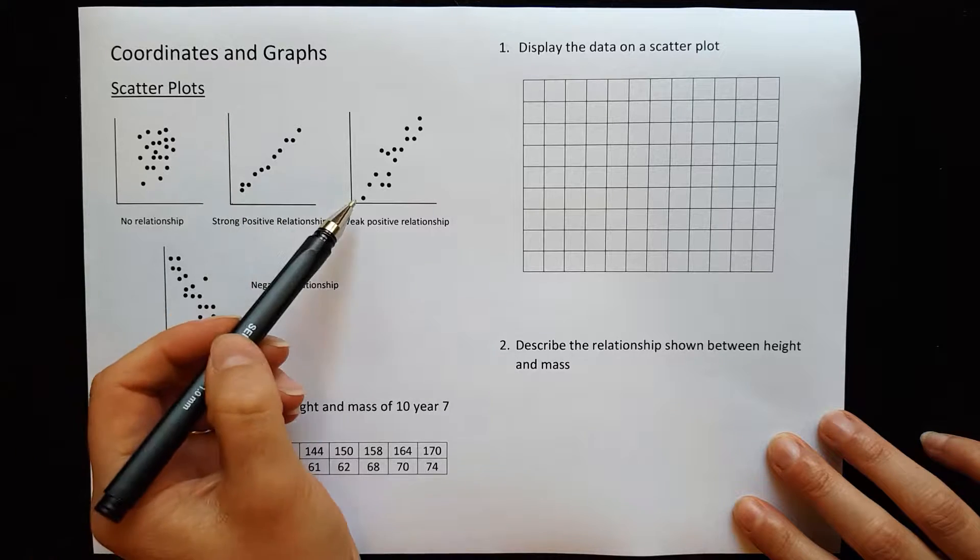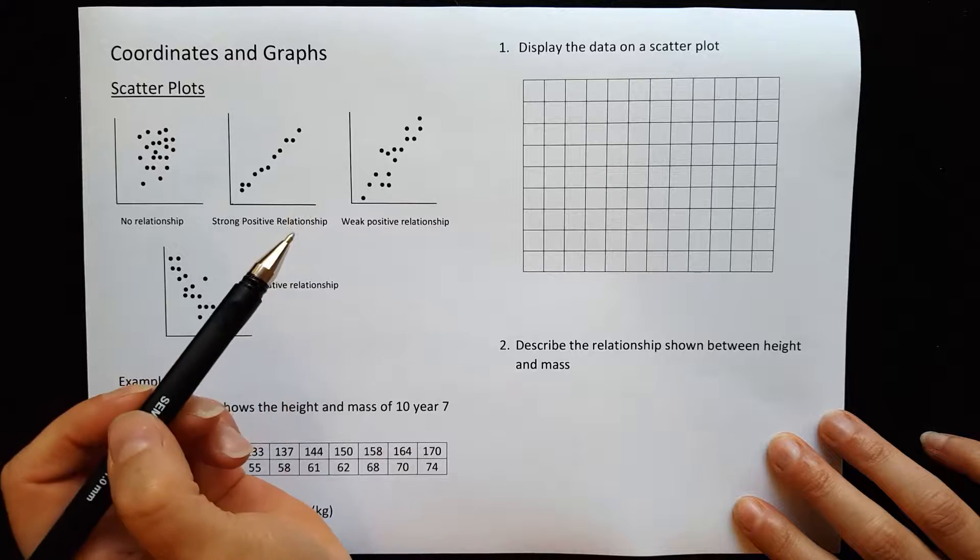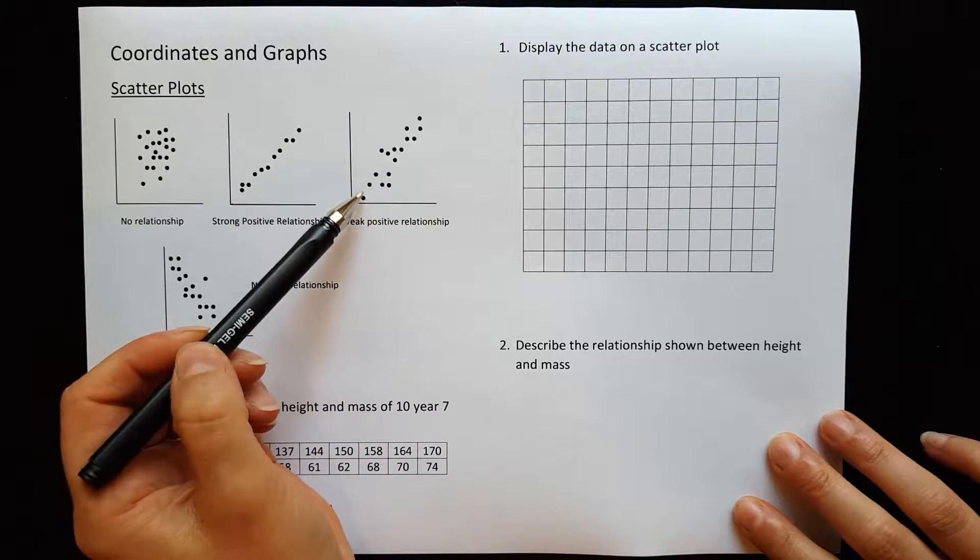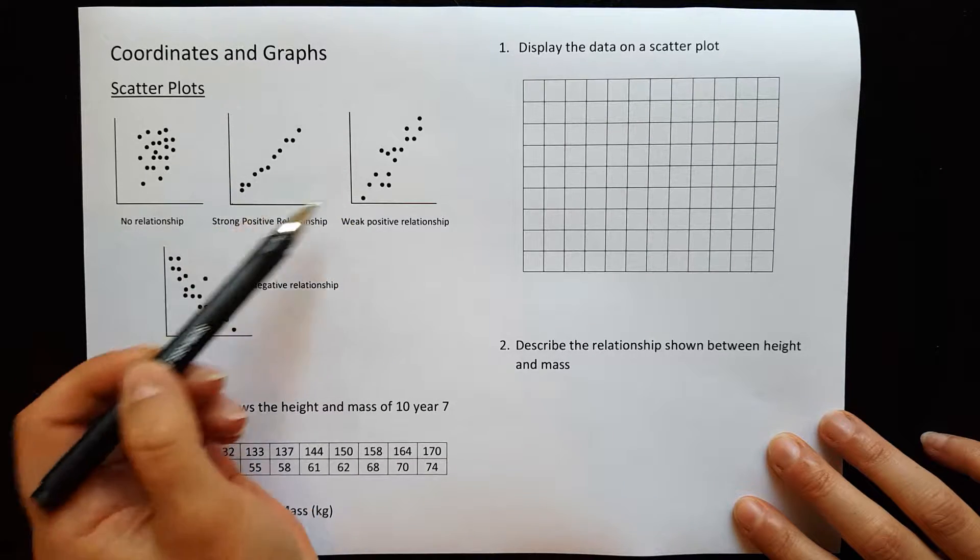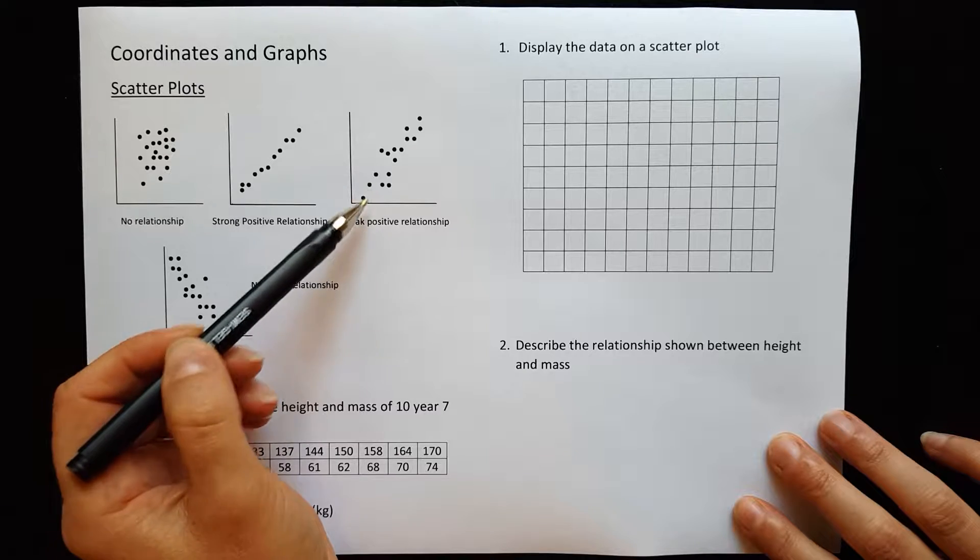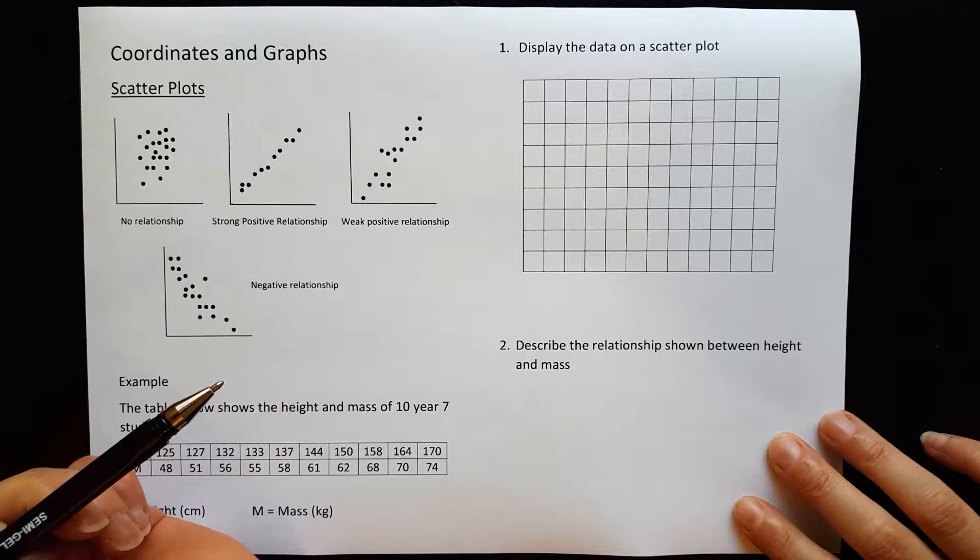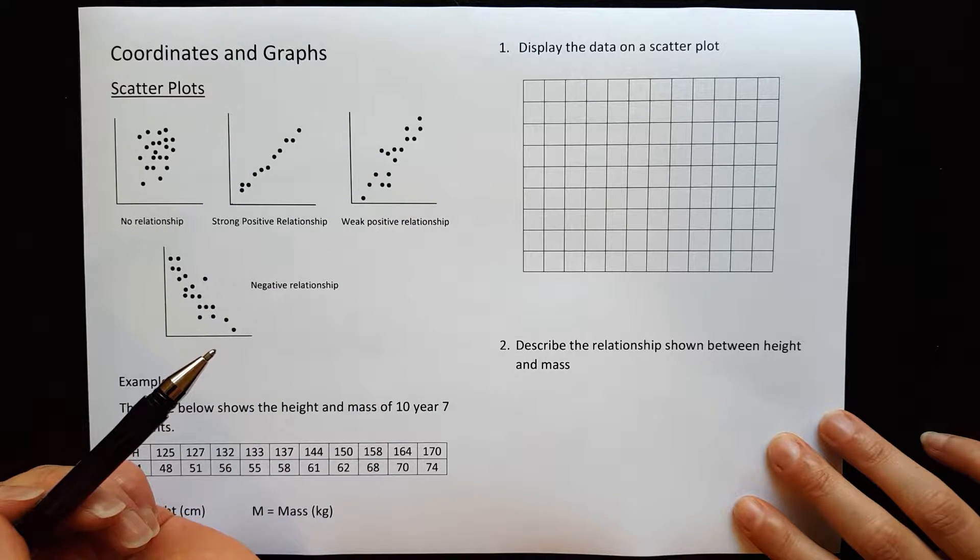Now the points can get a little bit further apart, and the further apart they get but still looking like they're in the positive direction, the weaker the relationship gets. So this is a weaker relationship than this one, a weak positive relationship because they're still both increasing, so they're still positive.